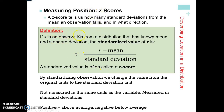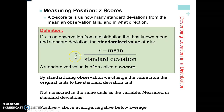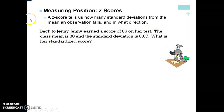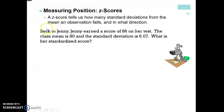From the last video, a couple of things with z-scores: number one, always label when you are finding z-scores with 'z equals.' Also remember that z-scores don't have any units because we're standardizing the score. A z-score tells us how many standard deviations from the mean an observation falls and in what direction — positive means above the mean, negative means below.